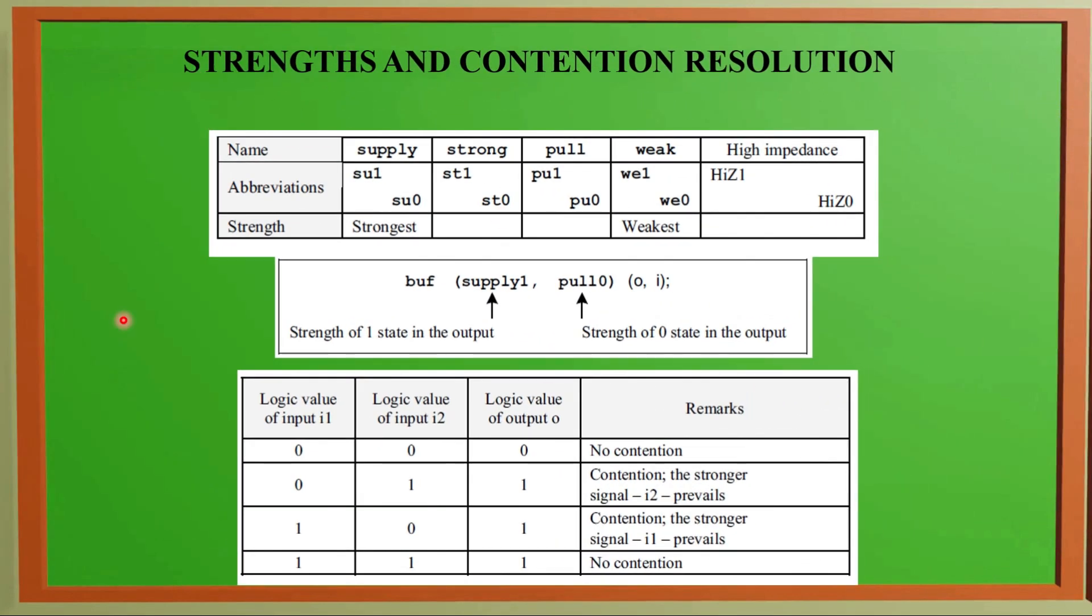Let us have an example of strengths and contention resolution. We have abbreviations where Supply 1 and Supply 0 will have strongest strength because we have to give priority to the supply. Then we will have Strong 1, Strong 0, Pull 1, Pull 0, and Weak 1, Weak 0 which has weakest strength.